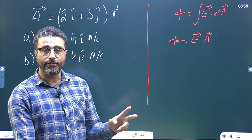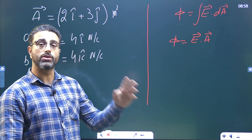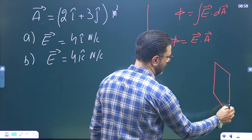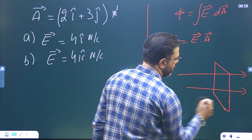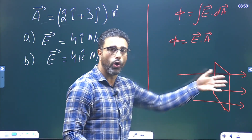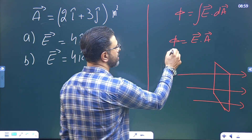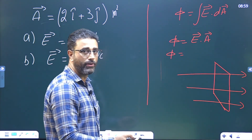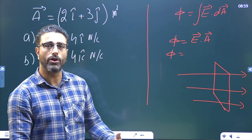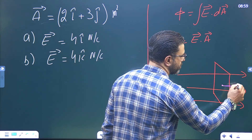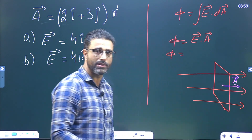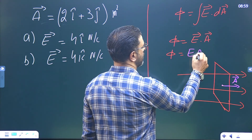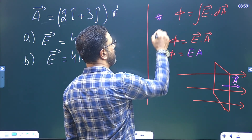A third case: if the field is uniform, the surface is plain, and the field lines are crossing through the surface normally — like if we have an area and the field is going through it perpendicularly — then the angle between the direction of area and the direction of the electric field is zero. The direction of area is always taken perpendicular to the surface, so cos of 0 is 1, giving flux equal to E times A.